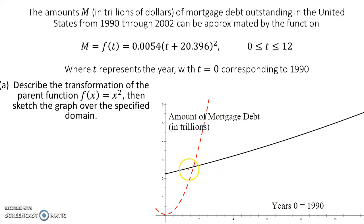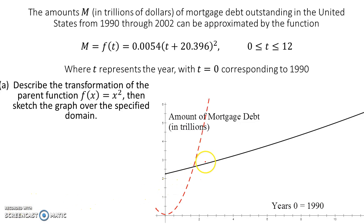We know that part has changed. We also know that the vertex has been moved. The vertex on the parent function would be down at zero, zero, but this one's vertex is somewhere way over there. So we know that it's been translated horizontally — shifted horizontally by some factor.